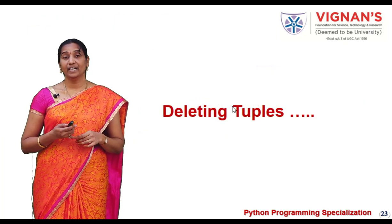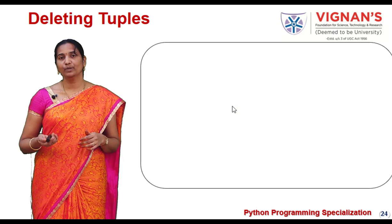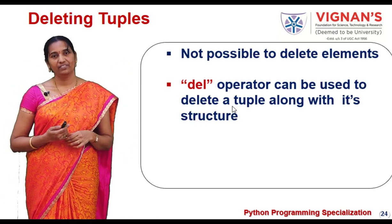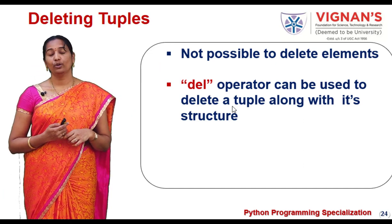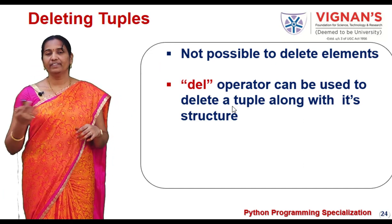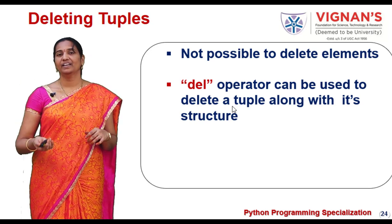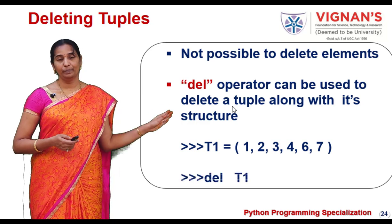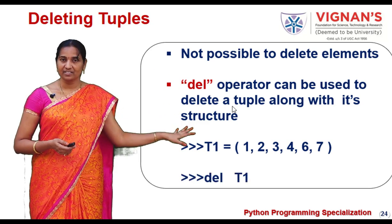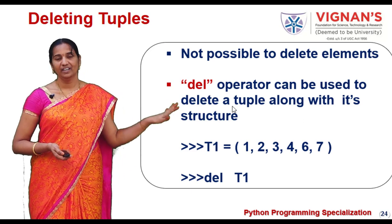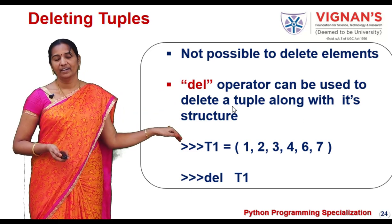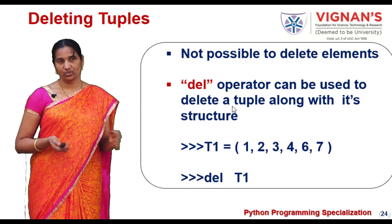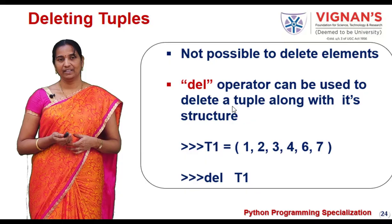Now let us see how to delete tuples. Since tuples are immutable, it is not possible to delete any particular element or multiple elements from the tuple. The only way is to delete the entire tuple including its structure. Similar to lists, we can use the del operator to delete the entire tuple t1 along with its structure. Once you use del t1, the object t1 is deleted including its structure. That is how you delete a tuple in Python.